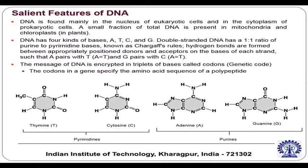DNA has 4 kinds of bases. DNA is double stranded typically and it has a 1-to-1 ratio of purine to pyrimidine bases. Hydrogen bonds are formed between the different bases, so that A combines with T and G combines with C. So you have A, T, C and G — these 4 bases.